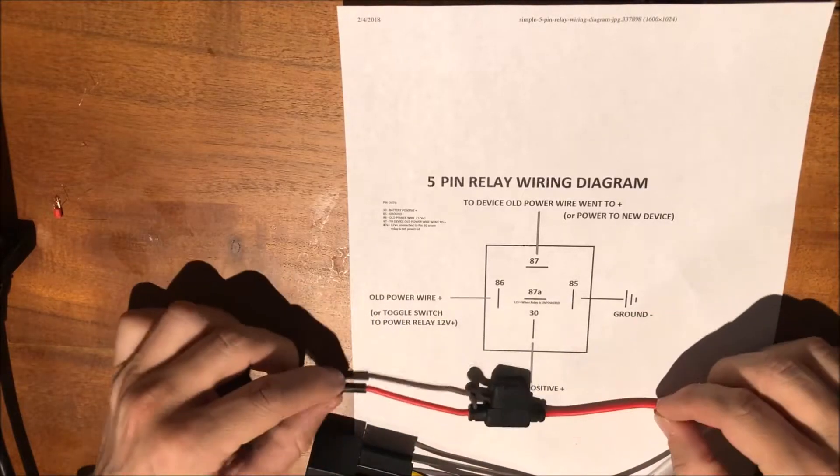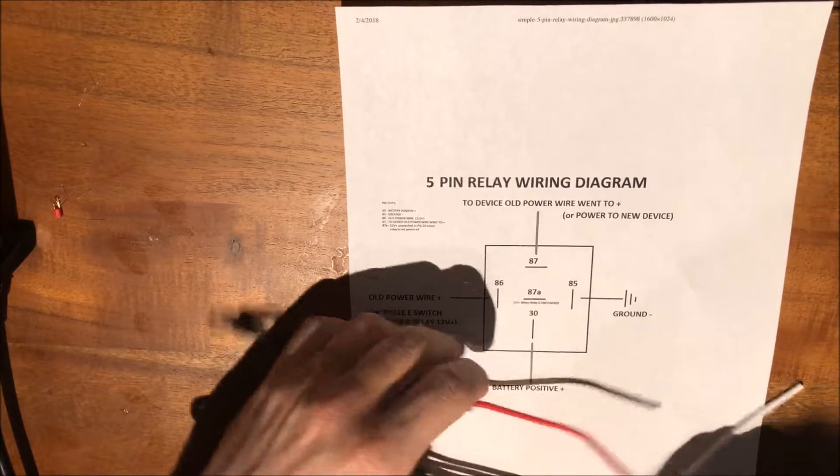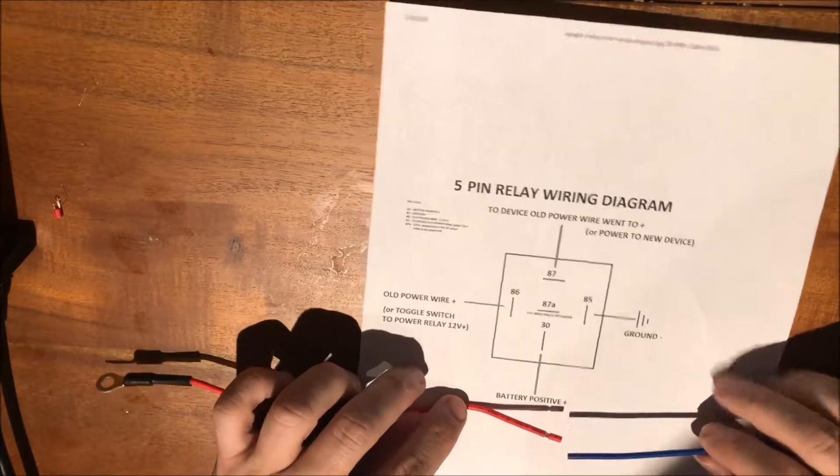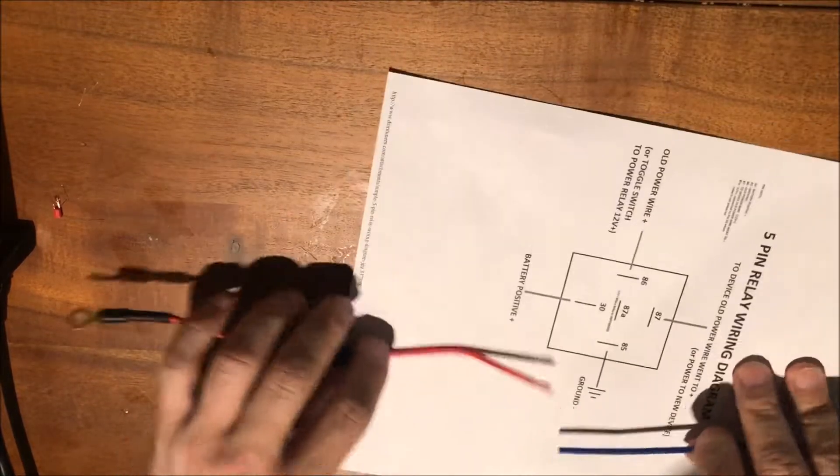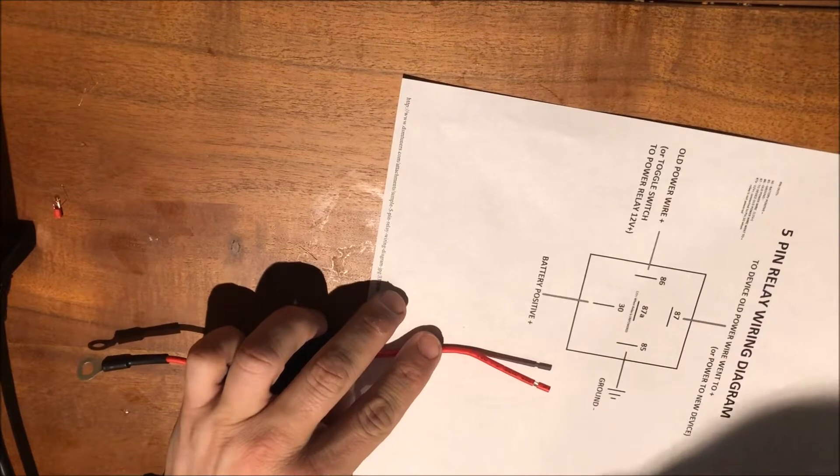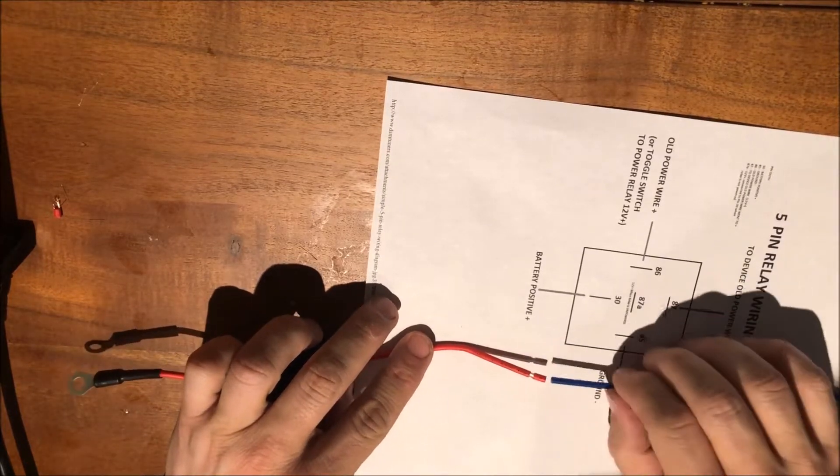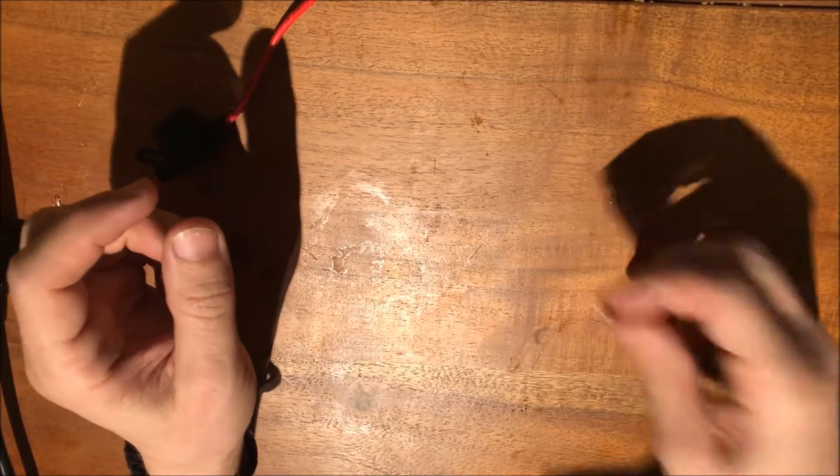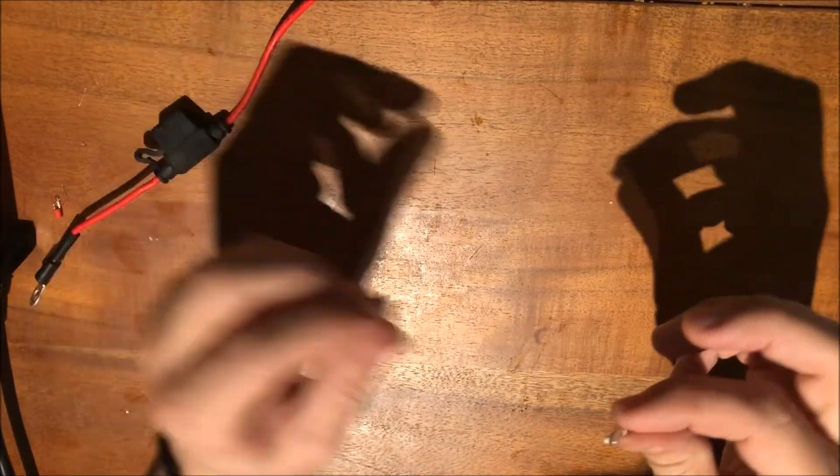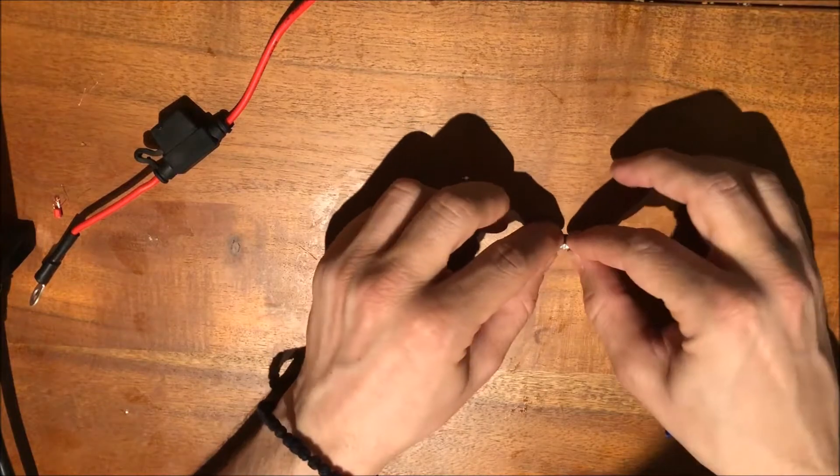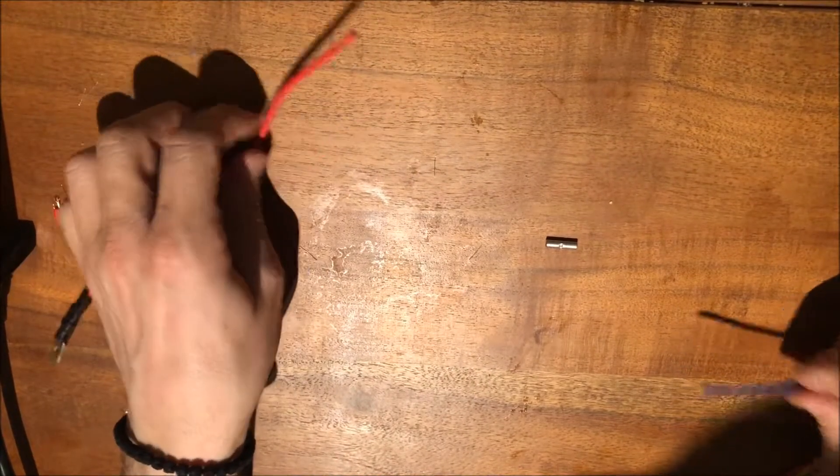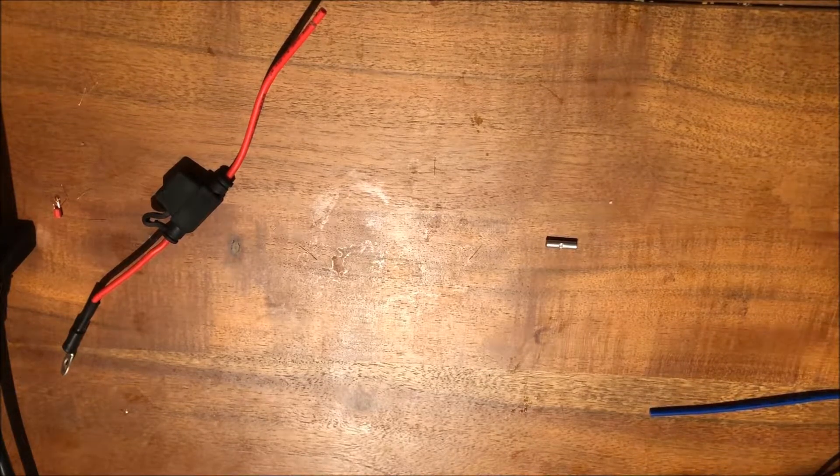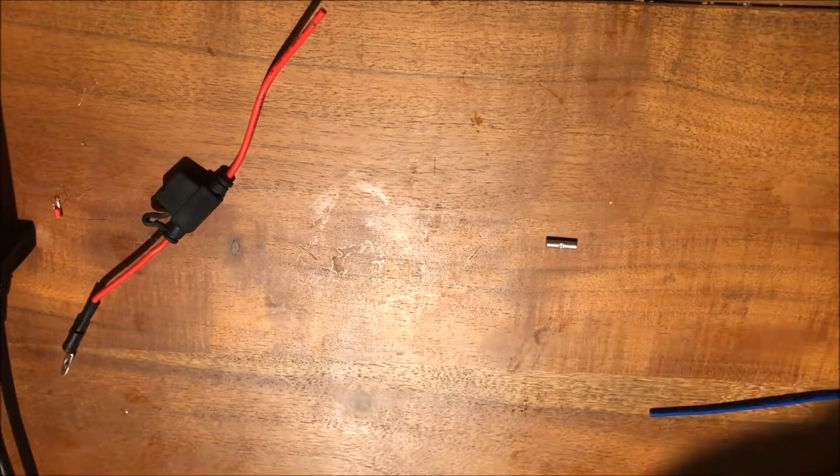So as you can see, this is my inline fuse, and what I'm going to do here is connect these two things so that here you have battery positive, and that's going to go to port 30. This time I'm gonna use this uninsulated butt connector. I'm going to first crimp the two connections, then solder them, then cover in some heat shrink.